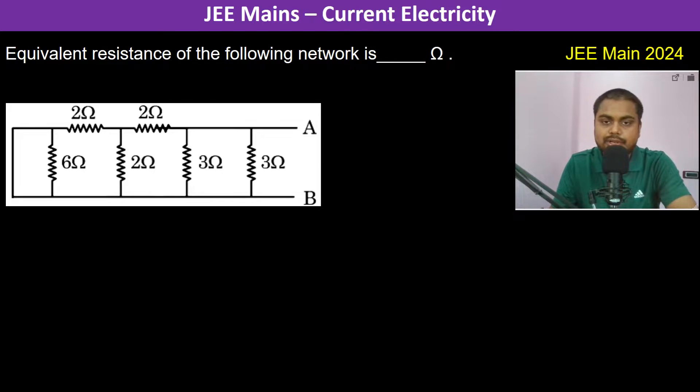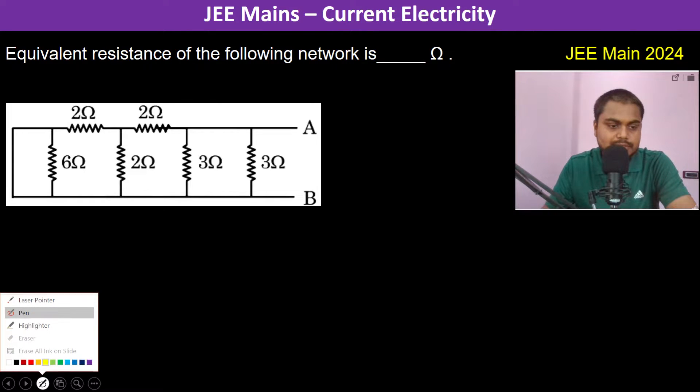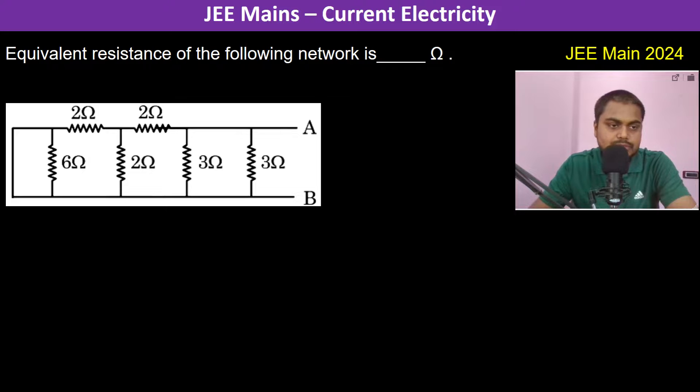The equivalent resistance of the following network is... So this is short circuited, okay, this one is short circuited. Therefore, the current is not going to pass through the 6 ohm, it's going to pass through this only.